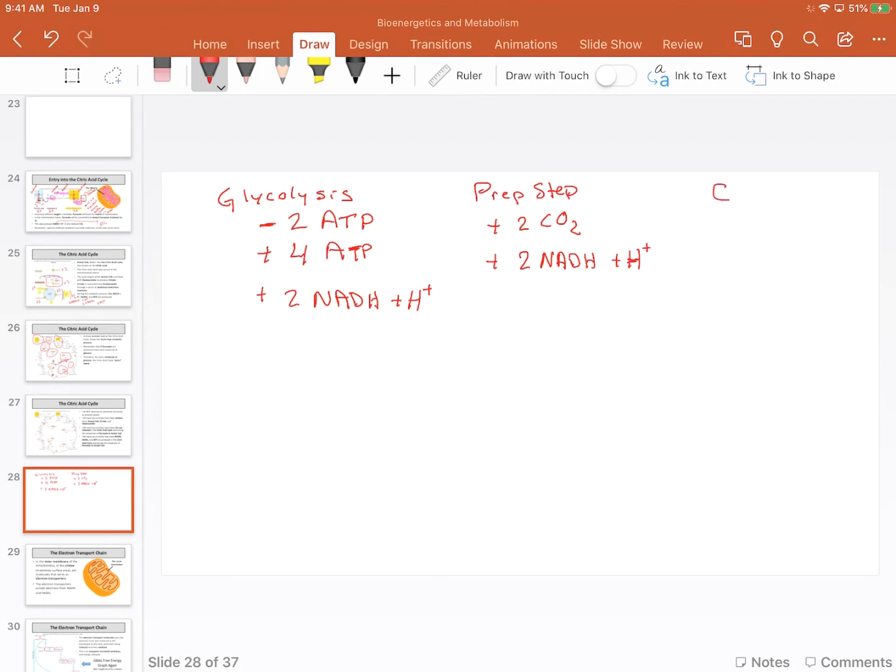Now, let's look at the citric acid cycle. During my citric acid cycle, I'm going to take that acetyl-CoA, and from that, I'm going to produce a total of six NADH plus my hydrogens, two FADH2s, and four carbon dioxides, and then we also need to add in my two ATP.